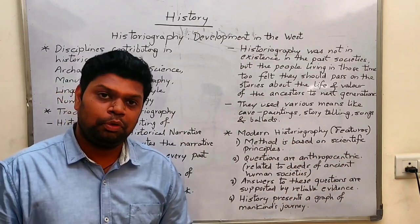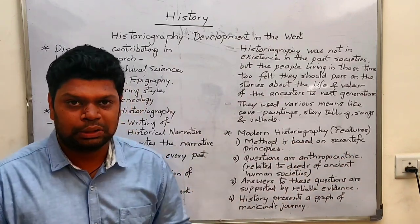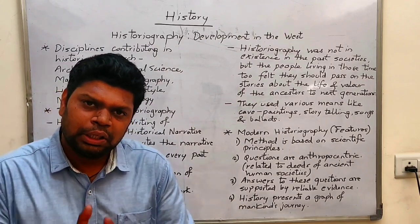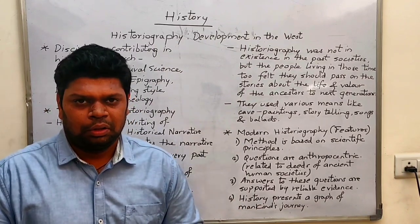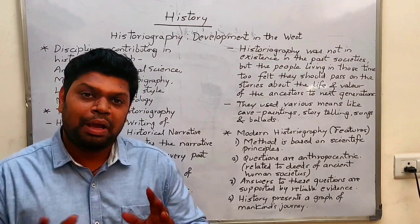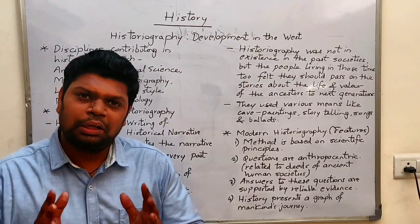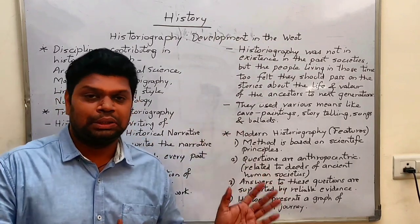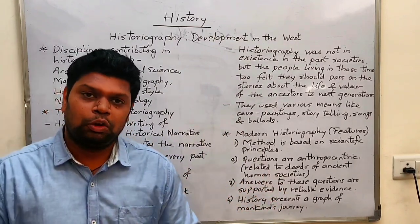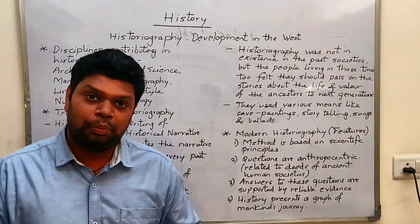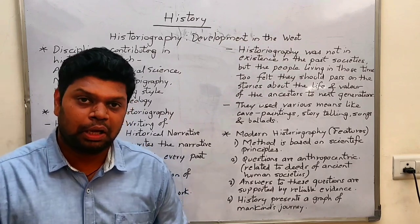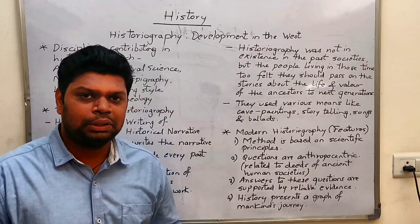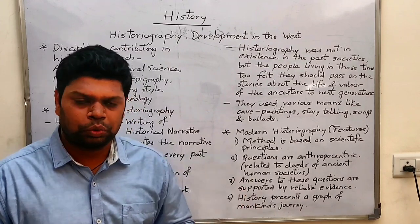The fourth characteristic is that history is a journey — a graph of mankind's journey. Where is our beginning? As we know, stone age man is our starting point. So the evolution of our journey, from that point to today, is the story of history. These are the important principles and characteristics of modern historiography.